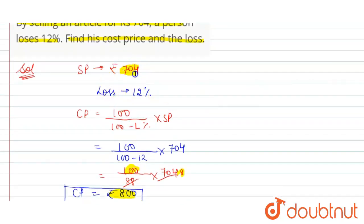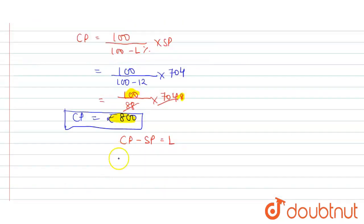That is 800 minus 704 is equals to loss. So from here, loss is rupees 96. 800 minus 704 is 96. So we find loss also.